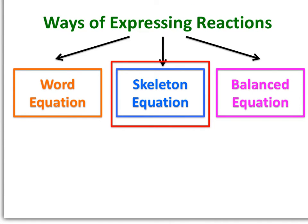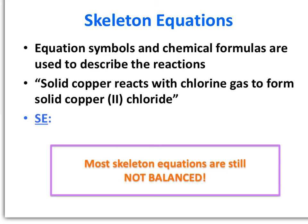Moving on to the next type: the skeleton equation. In this type of equation, we exchange those words for chemical formulas. A skeleton equation uses the same symbols as the word equation, but uses chemical formulas rather than words to describe the reactants and products. However, you're also not going to have a balanced equation — that's the next step.